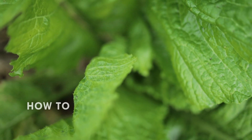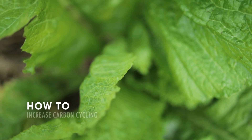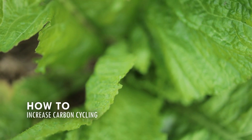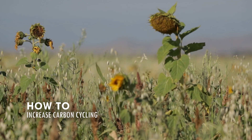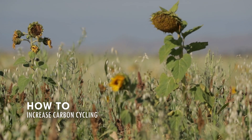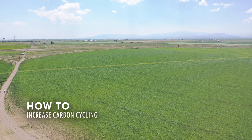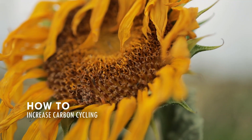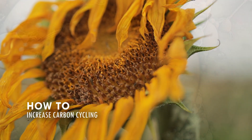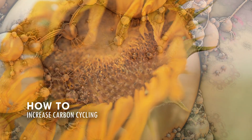Plants need carbon just like we do, but the form that they come in are different. So the plants get CO2 from the atmosphere, go through photosynthesis, and put it into a molecule like glucose.